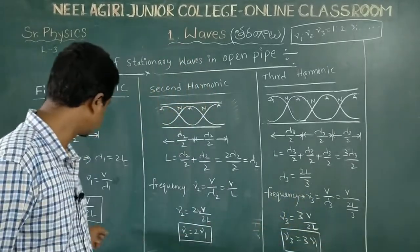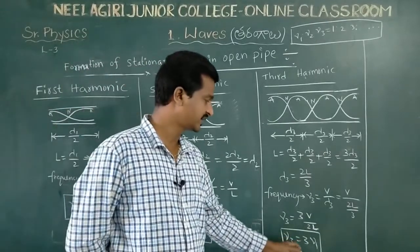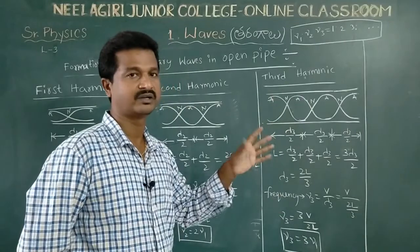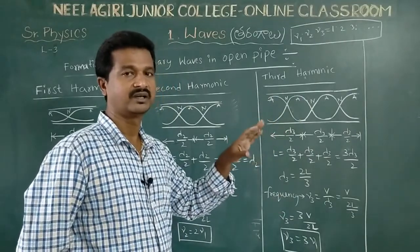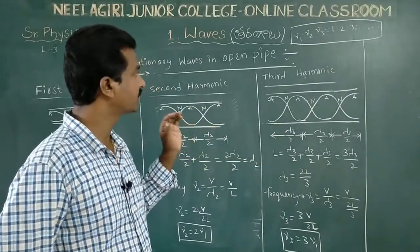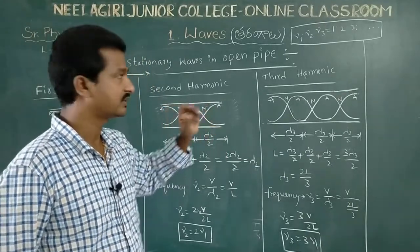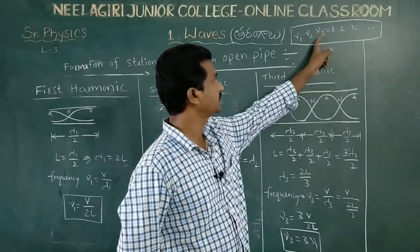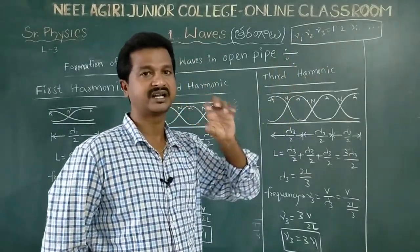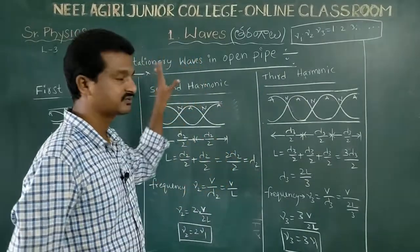Observing the pattern: ν₁ is the fundamental, ν₂ = 2ν₁, ν₃ = 3ν₁, ν₄ = 4ν₁, ν₅ = 5ν₁. The ratio of frequencies for an open pipe is ν₁ : ν₂ : ν₃ : ν₄ : ν₅ = 1 : 2 : 3 : 4 : 5.